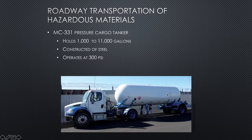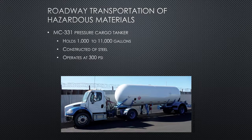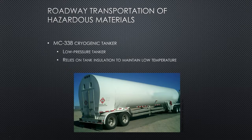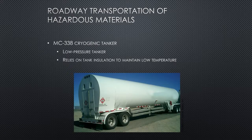A pressure cargo tanker holds 1,000 to 11,000 gallons, has rounded ends, and is constructed of steel or stainless steel with a single tank compartment. It operates at approximately 300 PSI — a lot of pressure. There is an explosion hazard if the cargo tank is impinged on by fire. That's important when identifying how far away you want to stay. When you look it up in the ERG, it will tell you the evacuation or containment distance to keep.